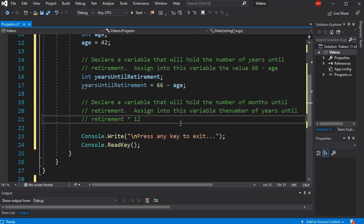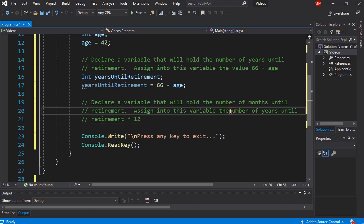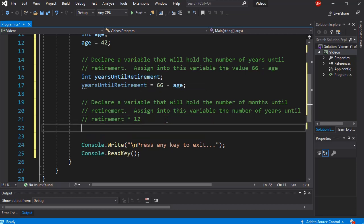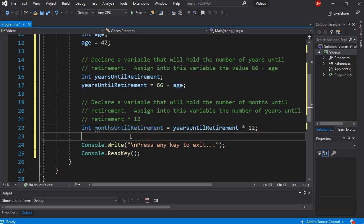All right. Finally, it says declare a variable that will hold the number of months until retirement. Assign into this variable the number of years until retirement times 12. So again, we're going to use a previous value to do a calculation and save the result. So let's declare this variable. This will also be an int. And I will say int monthsUntilRetirement. And I'm going to assign into this the yearsUntilRetirement times 12. In this case, I've declared the variable and I'm initializing it in one line, which is allowed in C#. So I've created a location to store the result. I have an expression on the right-hand side that will result in a literal value that I can then store into my variable.